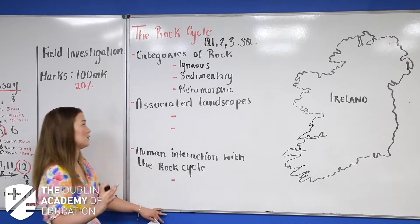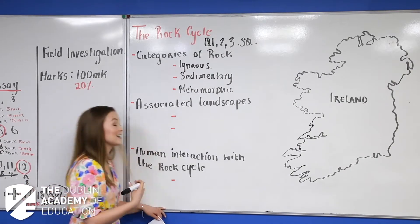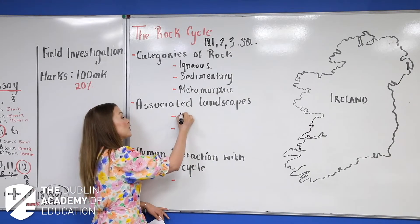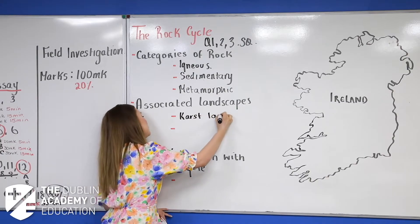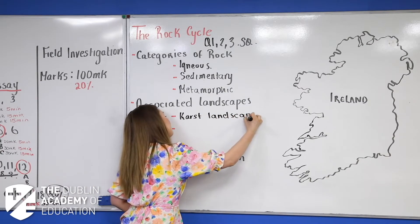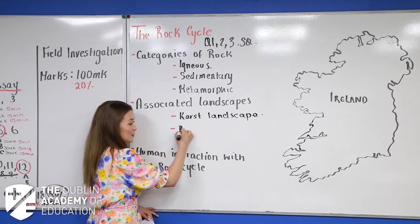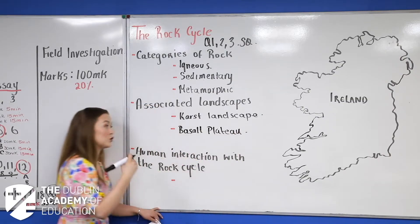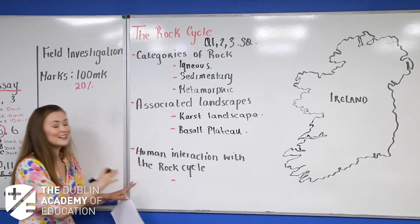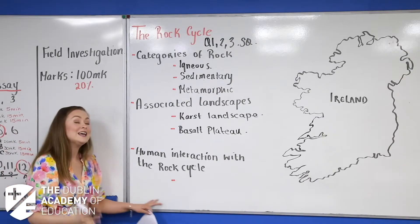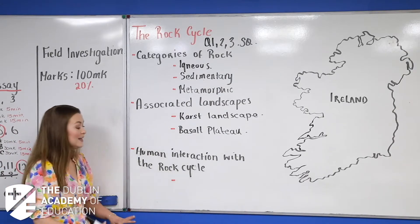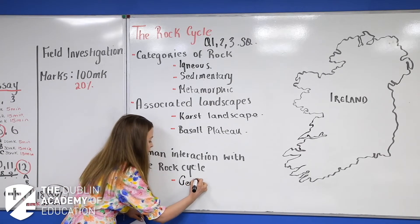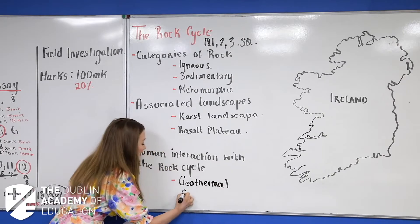They can ask you about the associated landscape — there are two associated landscapes which they can ask you about: your karst landscape and the second one, your basalt plateau. The last thing they will ask you as a long question is about human interaction with the rock cycle, and here we're going to look at geothermal energy.